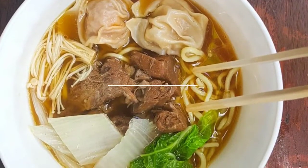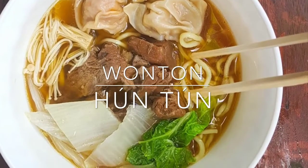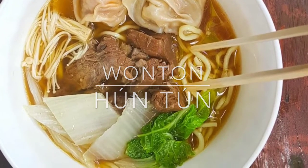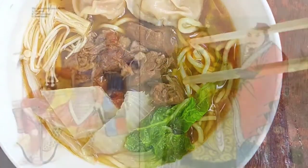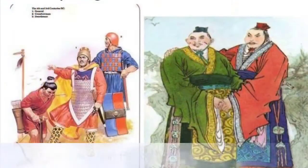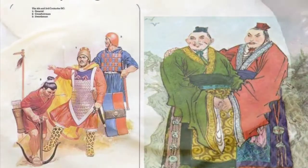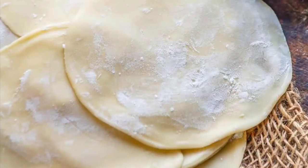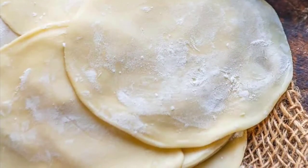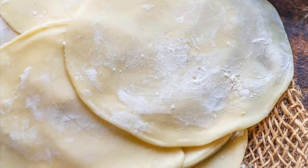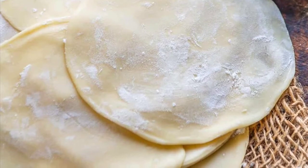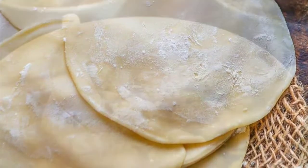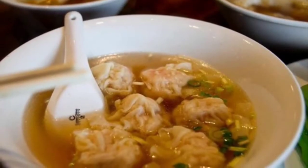Second on our list: Wonton. Time of origin: Spring and Autumn period. Wonton is a traditional Chinese dish made with wheat flour and meat filling, like dumplings.